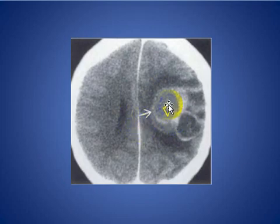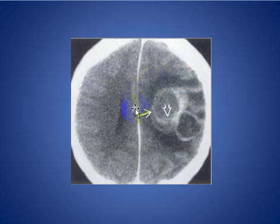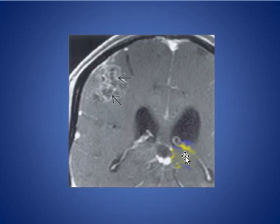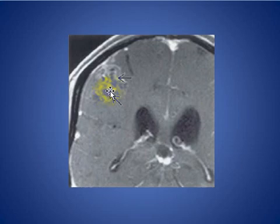AVM accounts for about 1-2% of lesions and can mimic a tumor, often seen with vasogenic edema. Here is a coronal MRI with a partially thrombosed AV malformation with flow voids noted in the enhancing area.